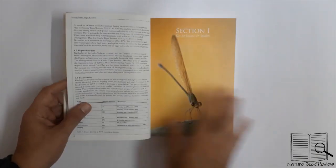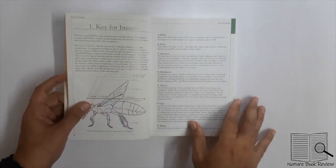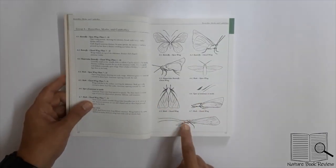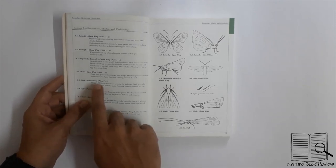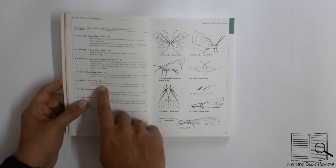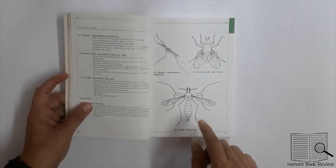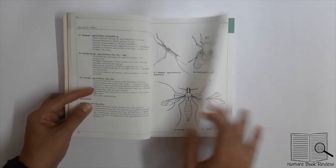Section 1, the key for insects and spiders, has very beautiful black and white illustrations. On the left hand side you'll see a description of how to identify insects and spiders in the field. These drawings have been made by the author himself.